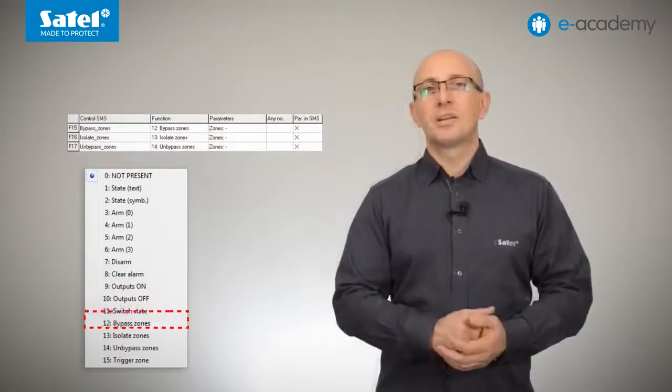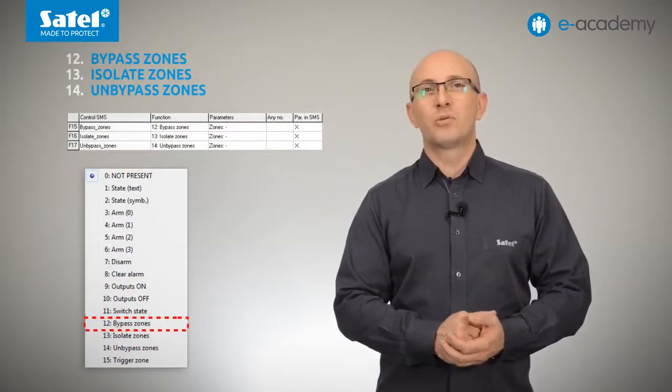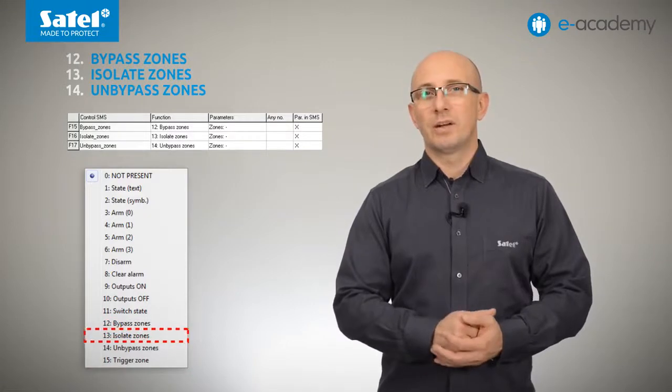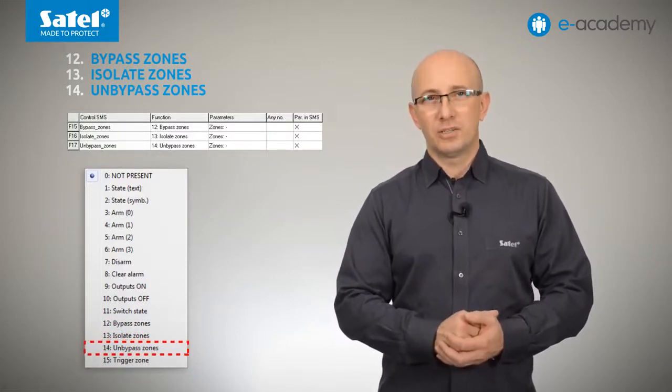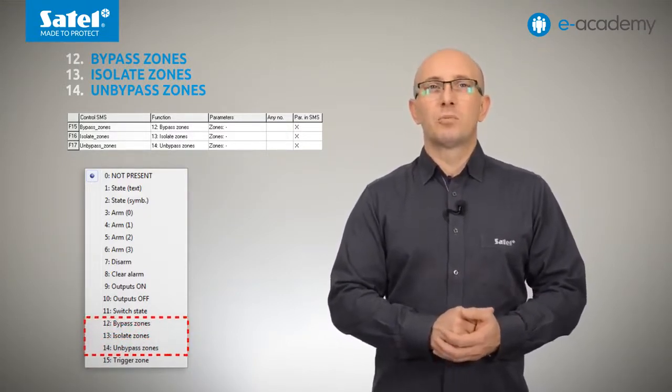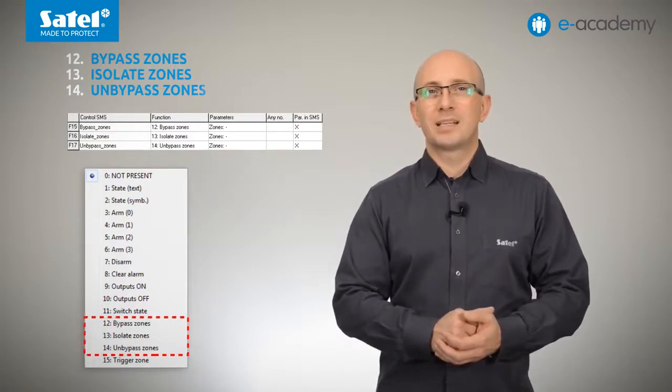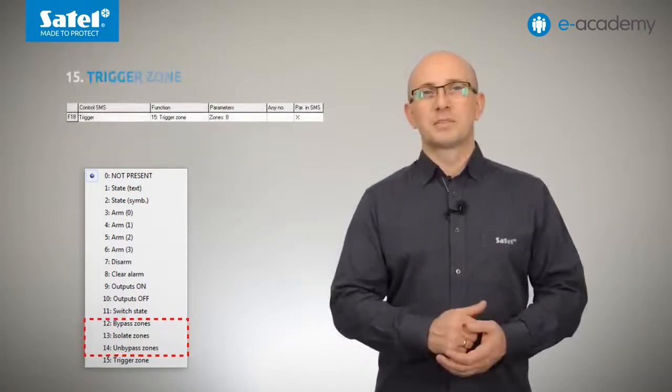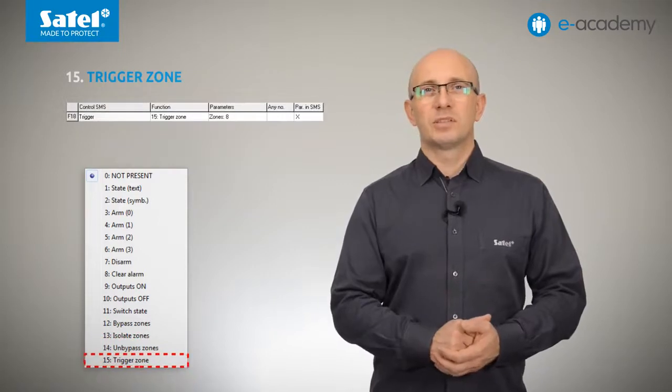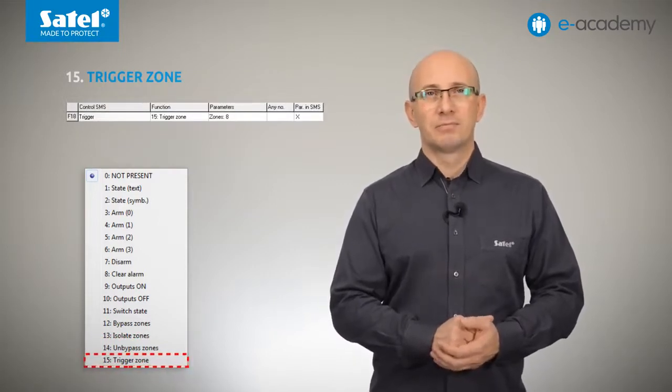The next three items on the list are 12 bypass zones, 13 ice isolate zones, 14 unbypass zones. They are used for bypassing or isolating as well as unbypassing the indicated zones in the system.